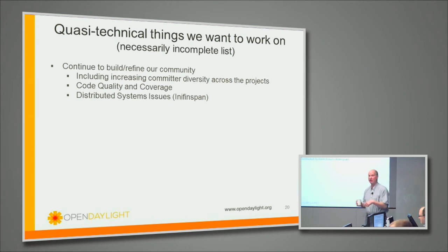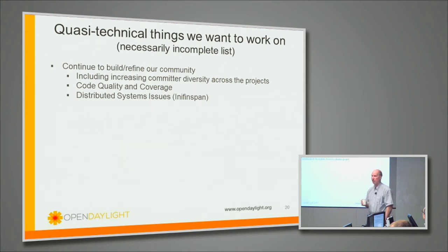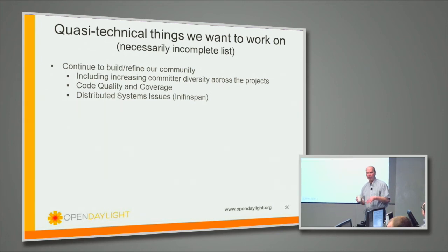There's the distributed systems challenge — this is a thing across all SDN controllers. How do you build a resilient controller? You need it to be a distributed system for resilience and scale. Right now the controller has Infinispan, which has a strong consistency model that's not really appropriate for networking — we prefer eventual consistency for various reasons. Colin Dixon from IBM is really all over this, and there's a project that's been proposed to look at it.